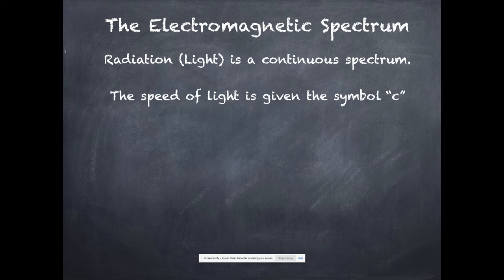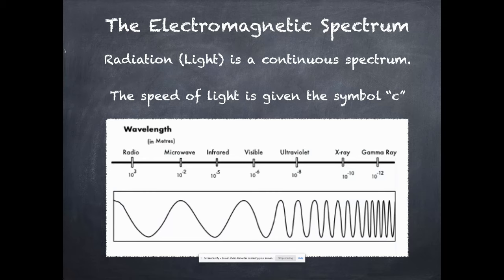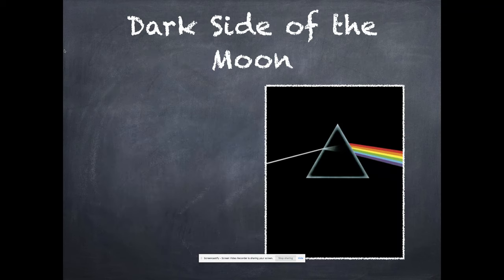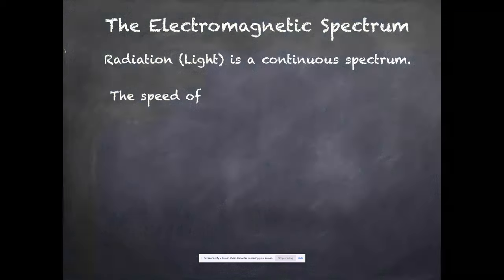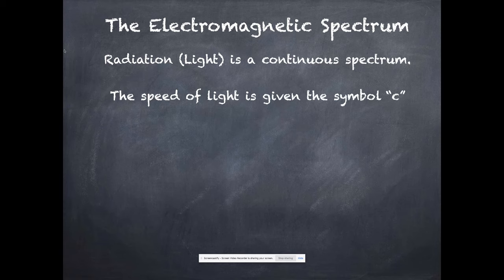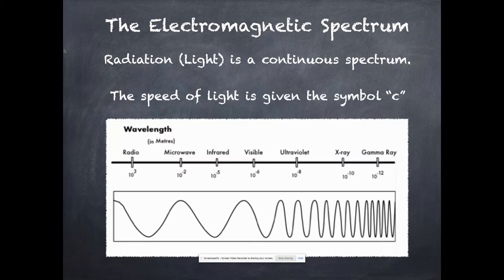The speed of that is given the symbol c, lowercase c. And this is what one of our spectrums would look like going from low energy to high energy. Now radio waves are very low energy. Then we go micro, infrared, visible, ultraviolet, x-ray, and finally gamma. And gamma is very high energy.